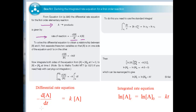The derivation is shown in Box 9.1 for a first-order reaction. Let's work through the key stages in the process, starting from the differential equation. To find a relationship between the concentration of A and the time, you first need to rearrange this expression so that the concentration of A is on one side of the equation and t is on the other. This procedure is called separating the variables.